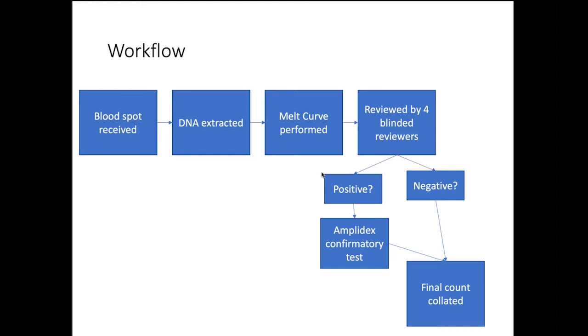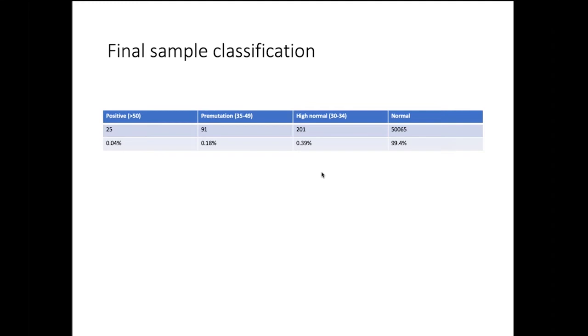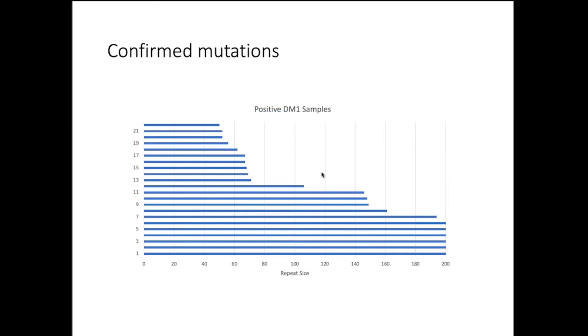So, the blood spot was received. The DNA was extracted. The melt curve was reviewed by those four blinded reviewers. If it was negative, the final count was collated. If it was positive, you did the confirmatory test and then that went into the final count. And these are the results. This is the take-home slide of the presentation. So, there were, out of that 50,000 or so, there were 25 positive, which is those greater than 50, and there were 91 pre-mutations. So, just about triple the amount of people that have a pre-mutation. And then, between 30 and 34, which you would call high normal, another 201 or so people. And then, of course, normal is the rest of them.